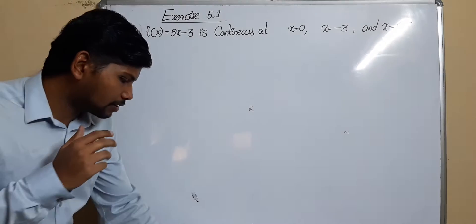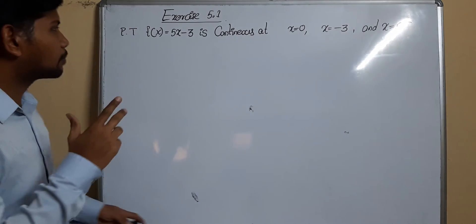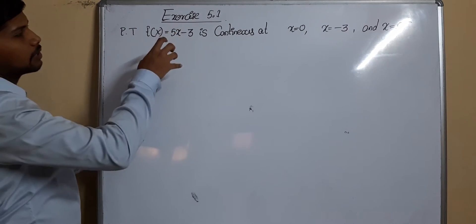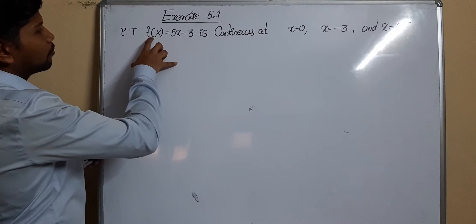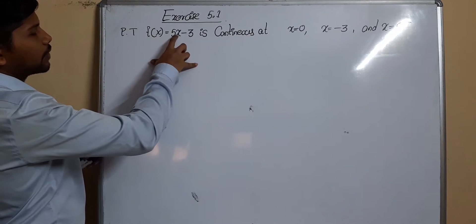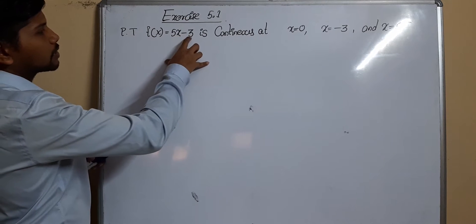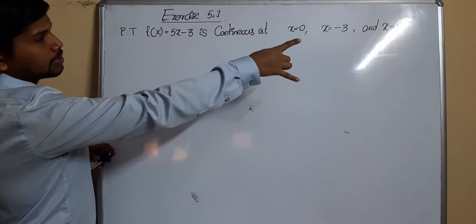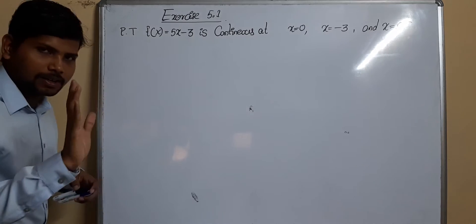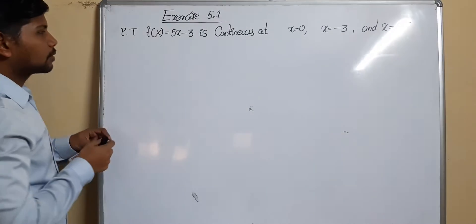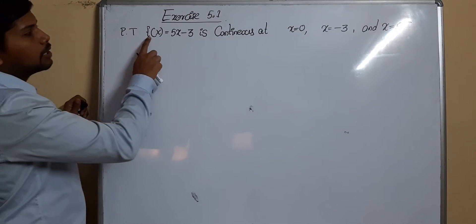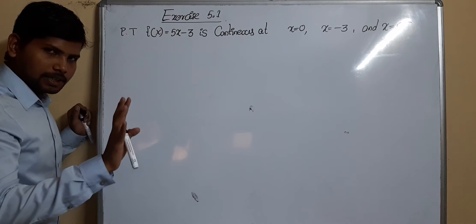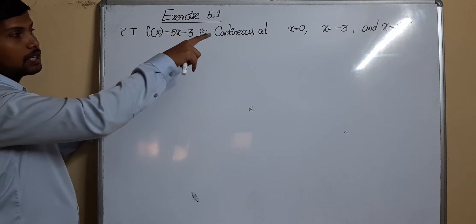Now let us look at the exercise questions. Prove that f(x) = 5x − 3 is continuous at x = 0, x = −3, and x = 5. Being a polynomial function it is continuous, but I need to show it is continuous at those specific points.